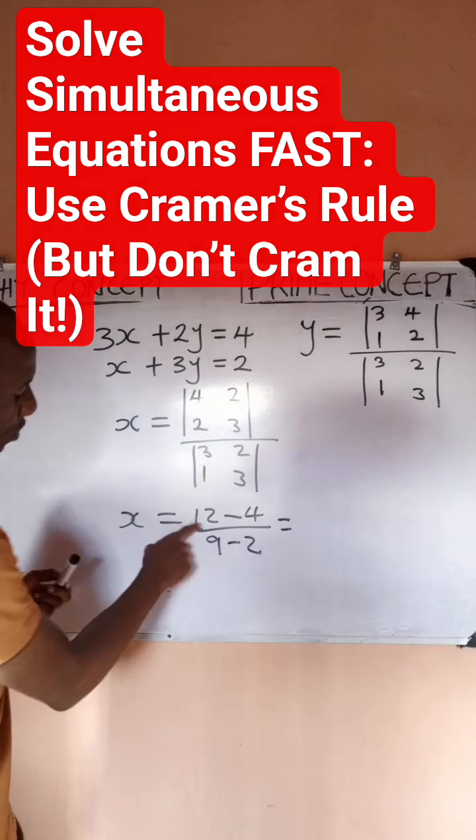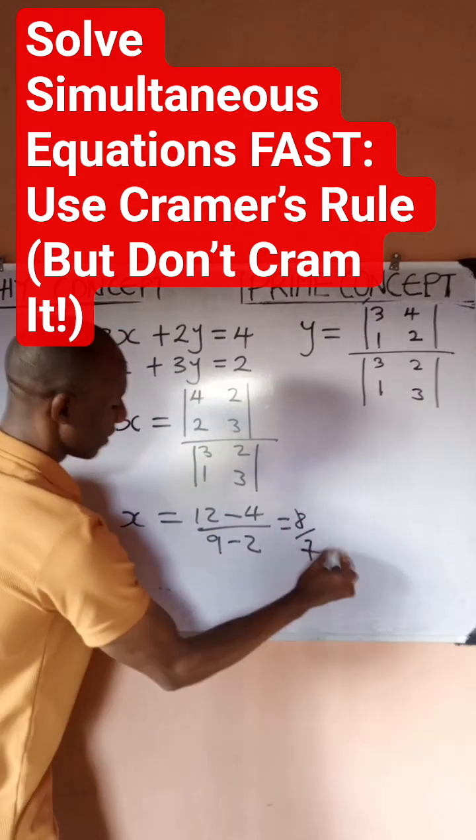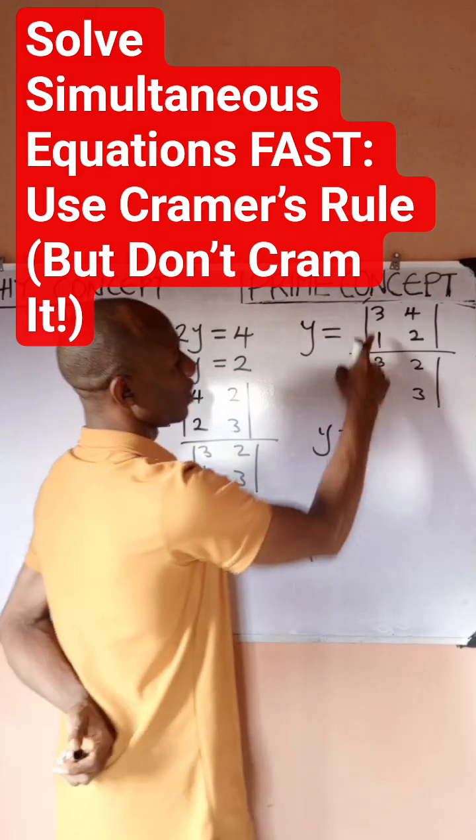So what is my answer here? My answer is going to be this is 8, 8 over 9 minus this is 7, so this is the value of x. How do I get the value of y?